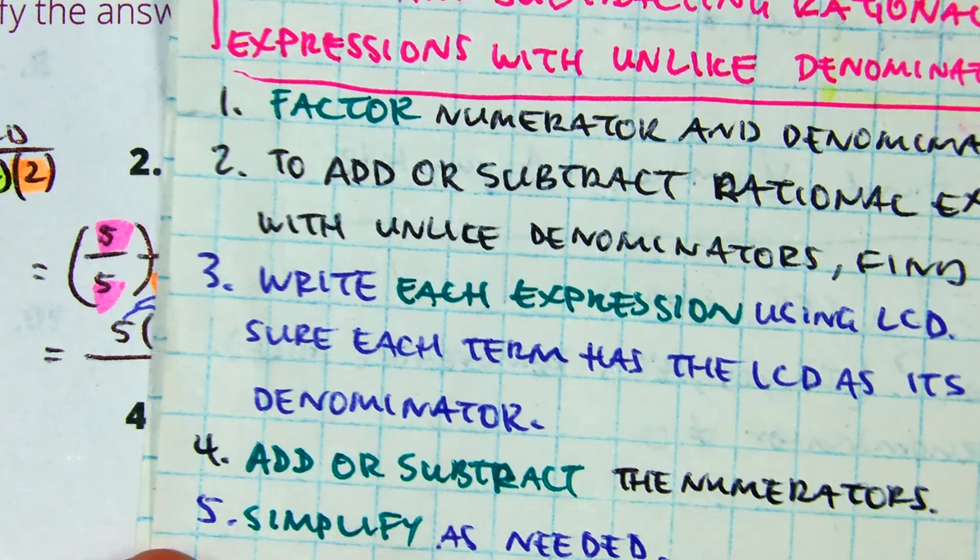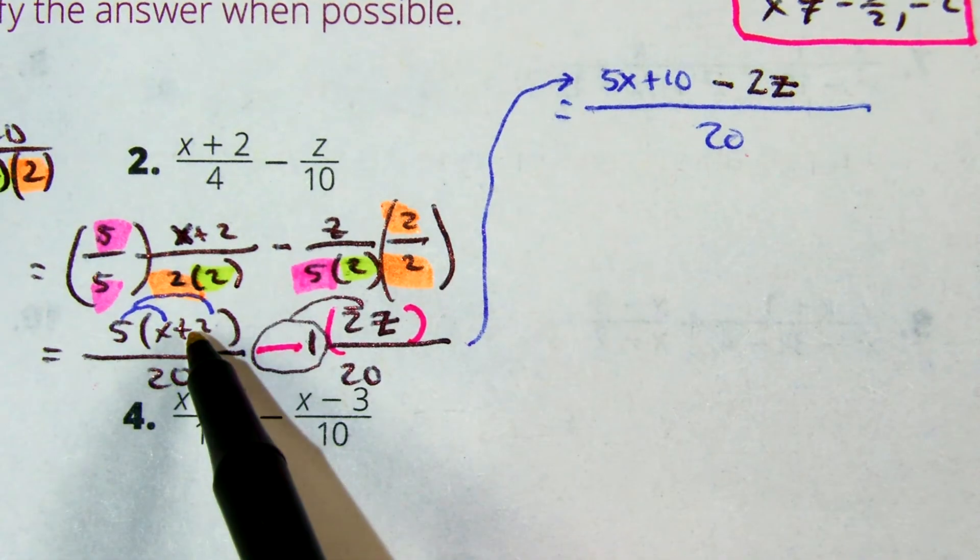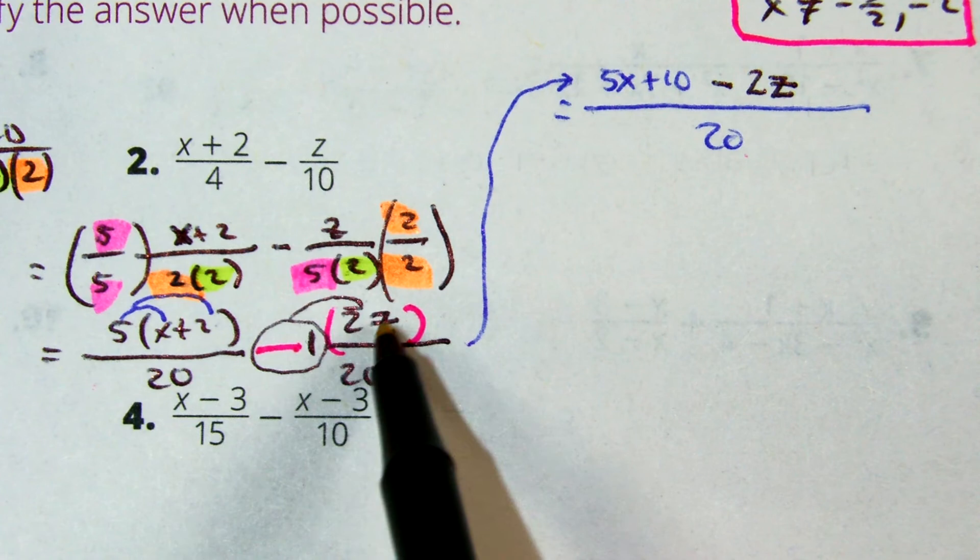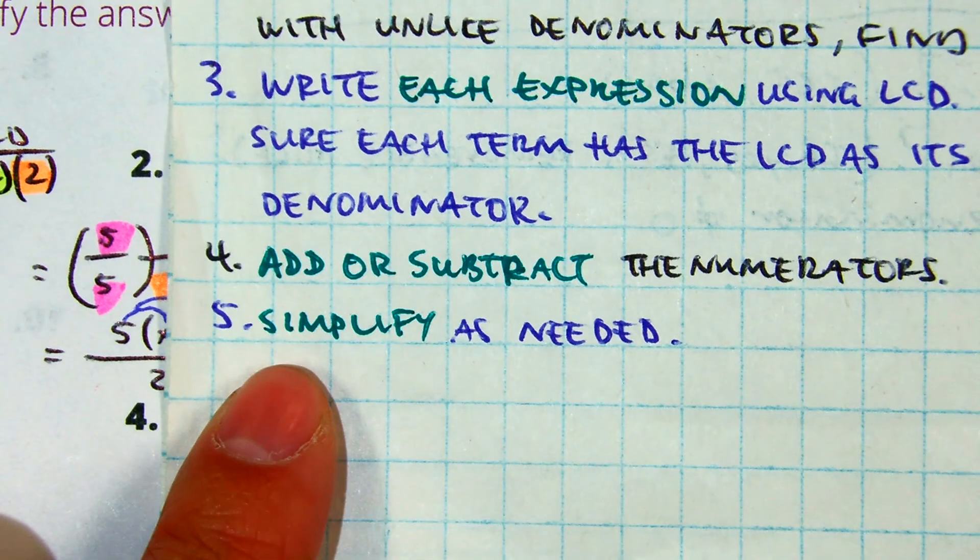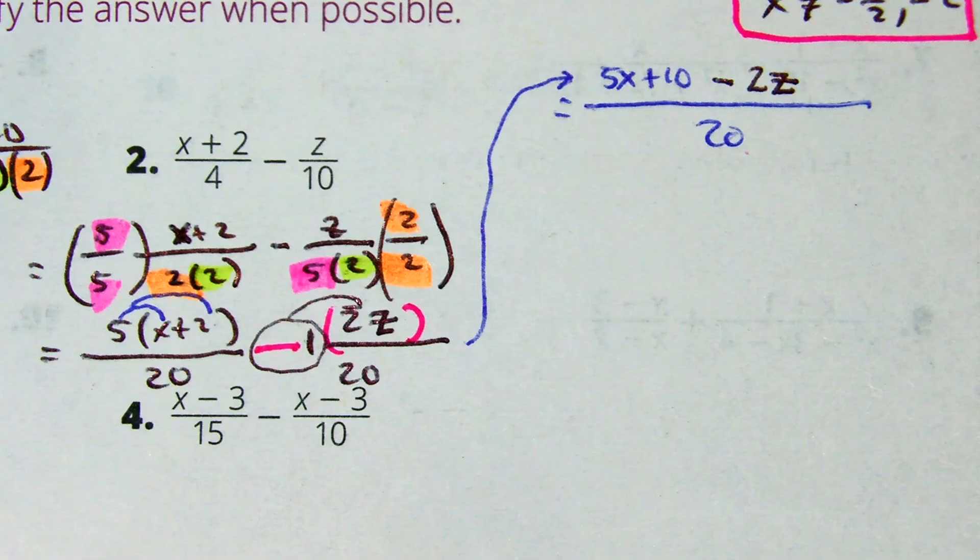We just added or subtracted the numerators by first distributing, and then distributing here. That's really subtraction, and then we're just combining like terms. That's the simplify as needed. But there are no like terms in the numerator, so this is my answer.